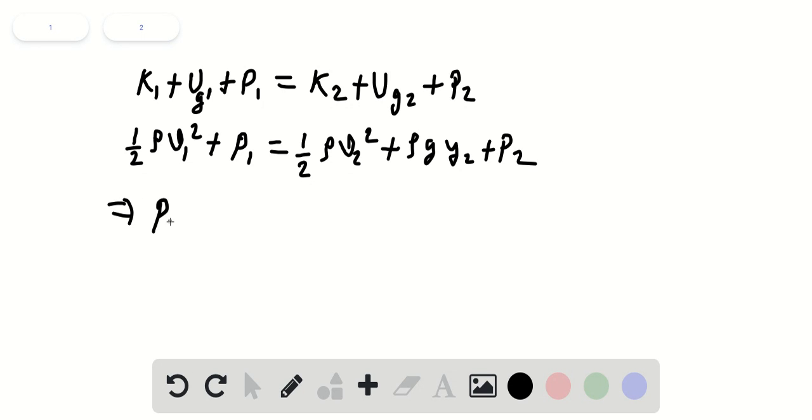So from here, P1 equals half rho V2 squared minus V1 squared plus rho G Y2 plus P2. Now plug in the value of everything we have got here.